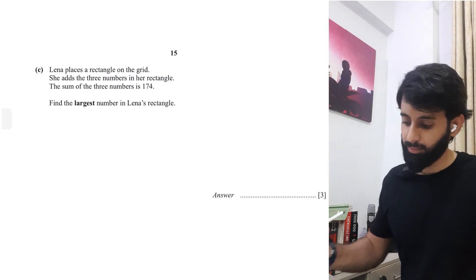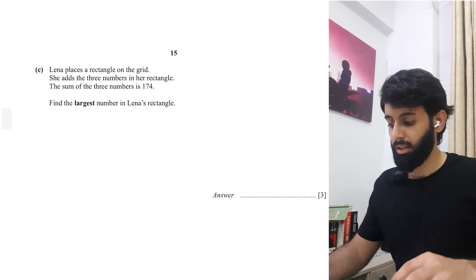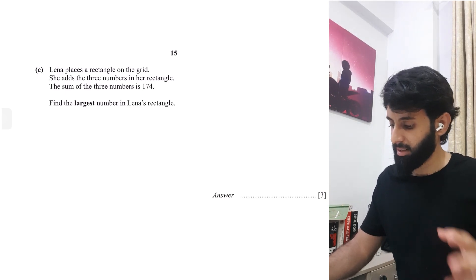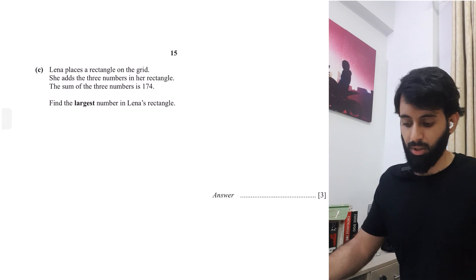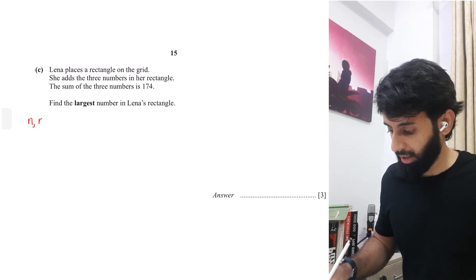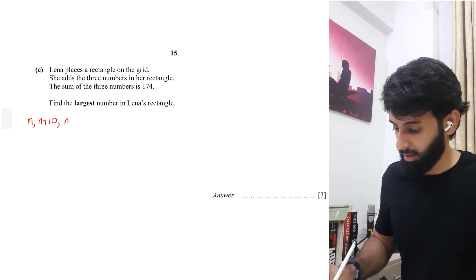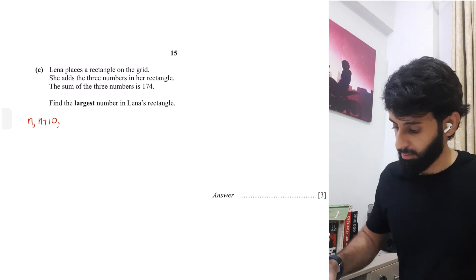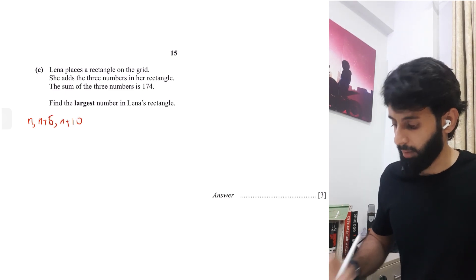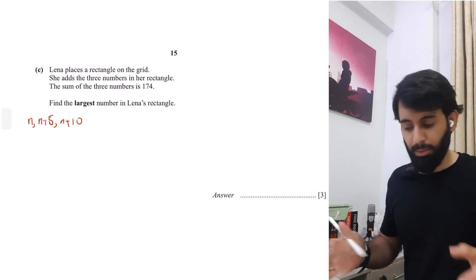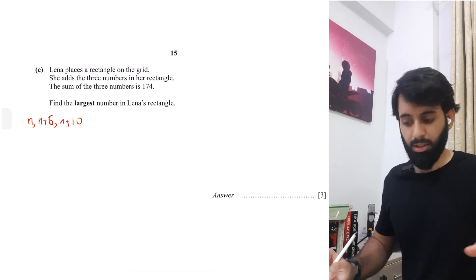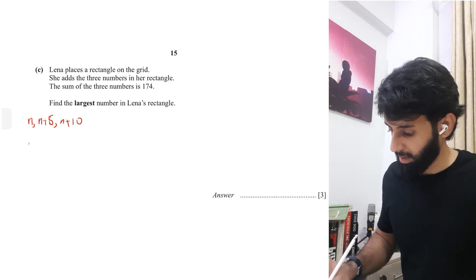Now let's do part c. Part c says Lena places a rectangle on the grid. She adds the three numbers in her rectangle. The sum of the three numbers is 174. So now that you have all the three numbers in terms of n, n, n plus 5 and n plus 10. Now what Lena is doing is basically she's summing up these three numbers and the sum of her numbers is basically 174. So if I sum them up, I get 3n plus 15. This is equal to 174.